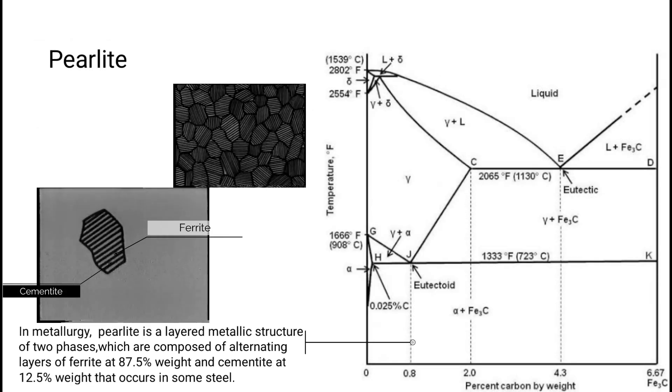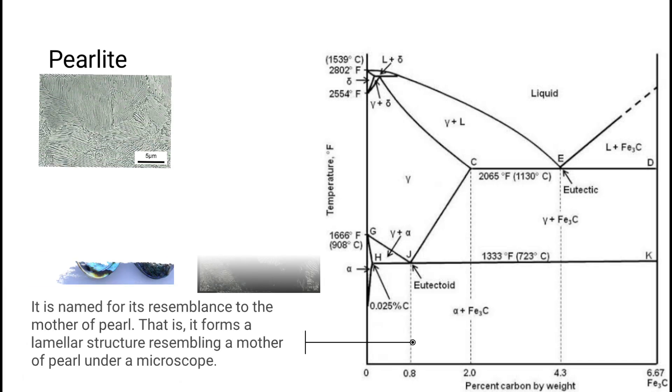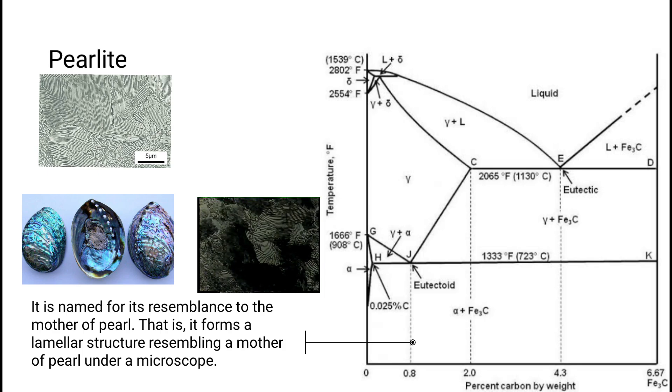Perlite: In metallurgy, perlite is a layered metallic structure of two phases which are composed of alternating layers of ferrite at 87.5 percent weight and cementite at 12.5 percent weight that occurs in some steels. It is named for its resemblance to mother of pearl. It forms a lamellar structure resembling mother of pearl under a microscope.